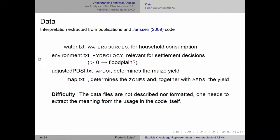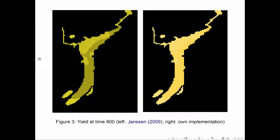One challenge I found: the data is very difficult to understand because there is no documentation. Each data file is one line with thousands of entries separated only by spaces. You have to go into the code and read how the data is used. I did this, and in the end I am ready to use the data the same way as Janssen did, which is hopefully the same way they used it originally.